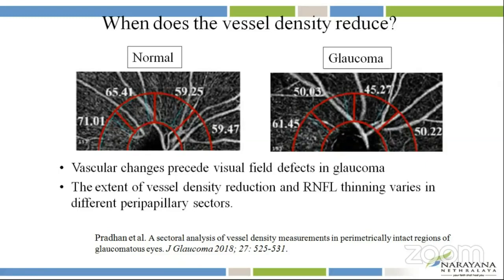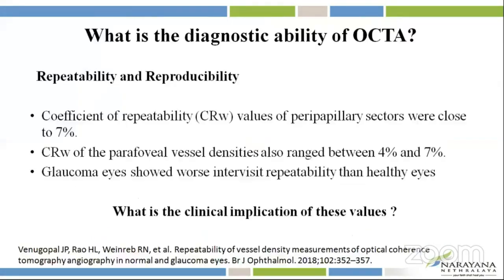The extent of the vessel density reduction and RNFL thinning varied. Whenever a new machine is introduced, the intravisit repeatability and intervisit reproducibility are constantly evaluated. In OCTA, the coefficient of repeatability along the peripapillary sectors and the macular region ranges between 4 to 7%. In glaucoma eyes, it showed worse intervisit repeatability than healthy eyes.